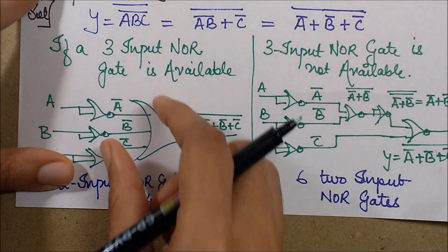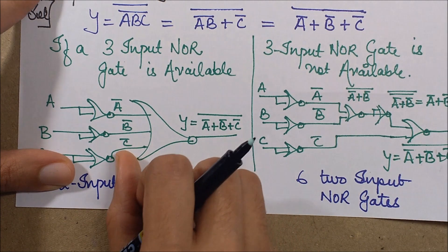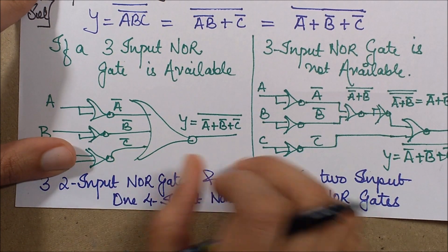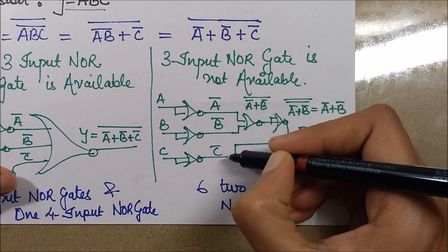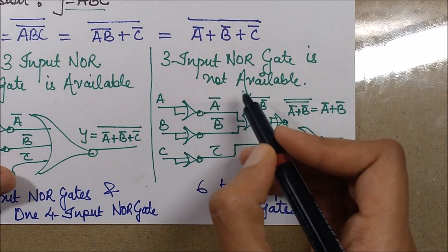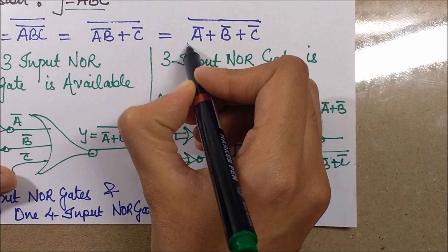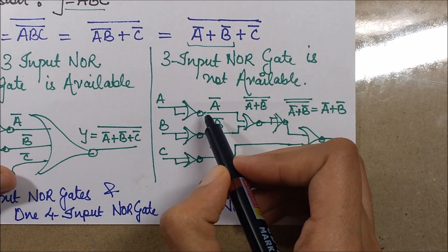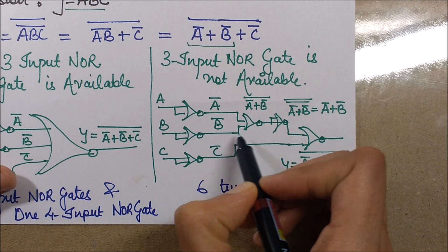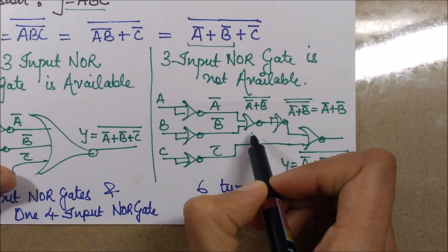Now, similarly, when I don't have this three-input NOR gate, I just have to use the two-input NOR gates. What I do is I form A bar, B bar, C bar in the similar manner. And then I form this expression first. So by forming this expression, I'll just give these two lines as input lines to this NOR gate.